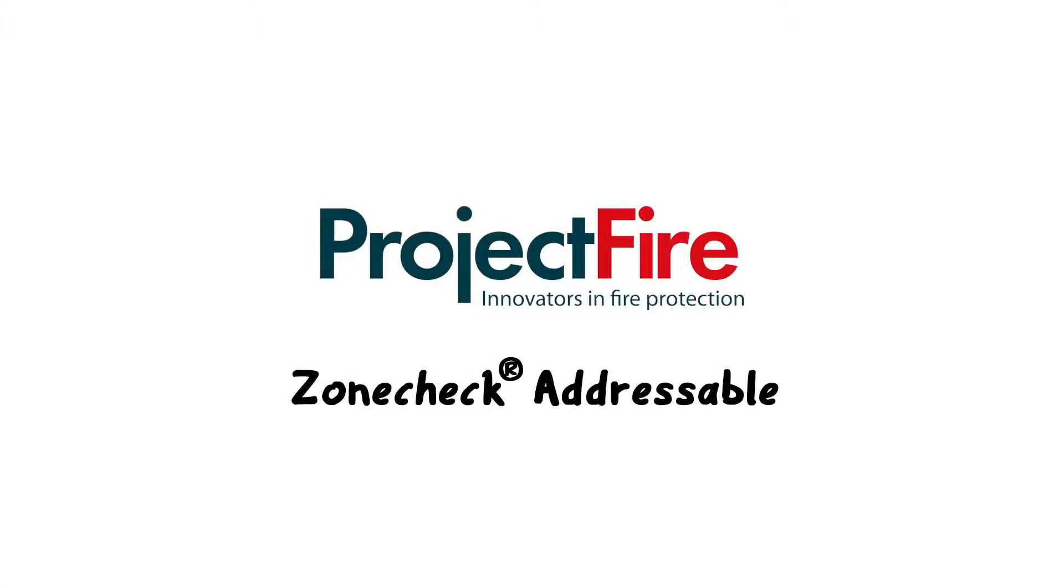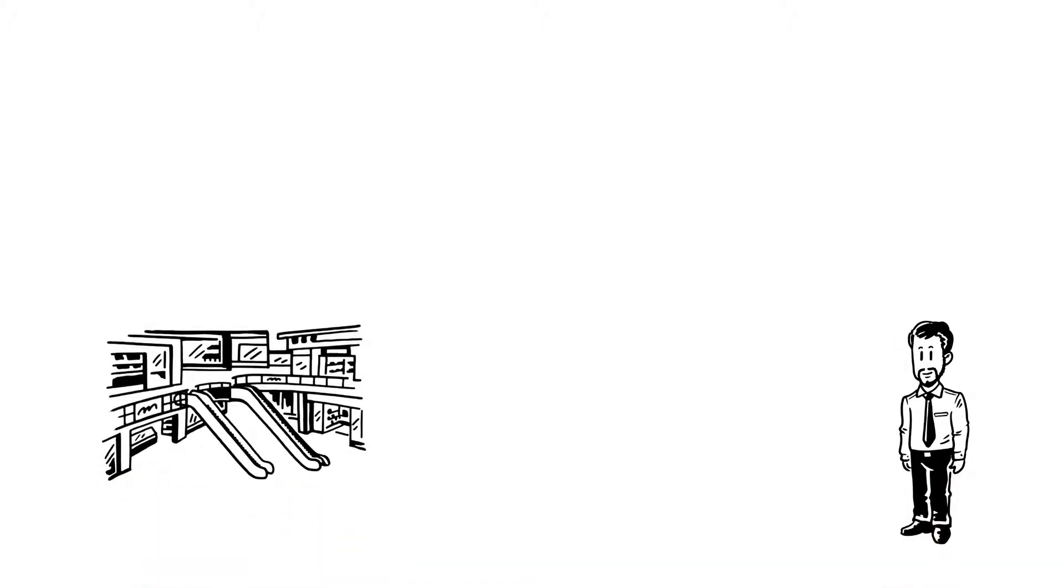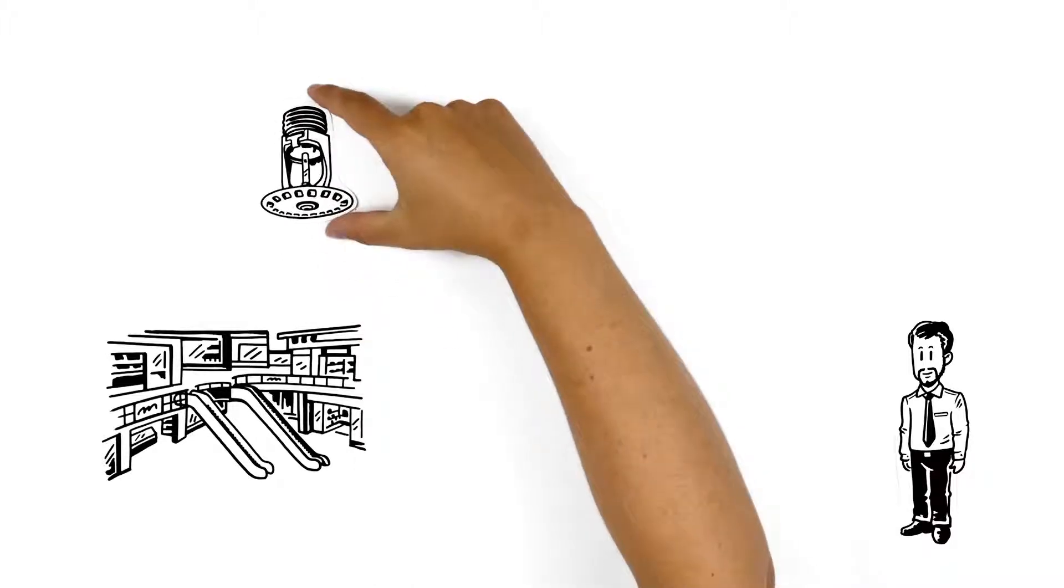Introducing ZoneCheck Addressable. This is Martin. He's the facilities manager of a shopping center. It's always difficult for Martin to test his sprinkler system.